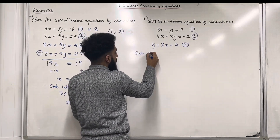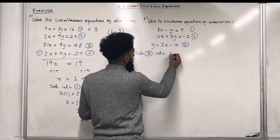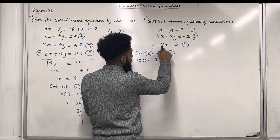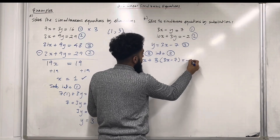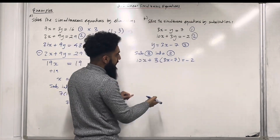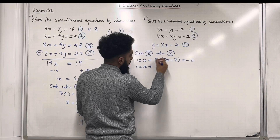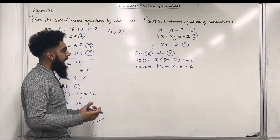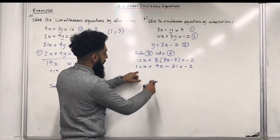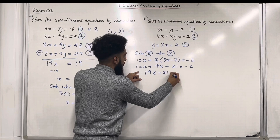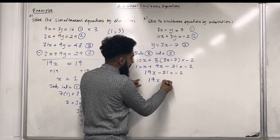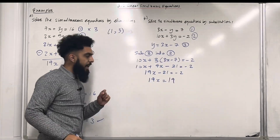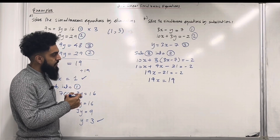Now I need to substitute equation 3 into equation 2. So this gives me 10x plus 3 lots of y, which is (3x minus 7), is equal to minus 2. We need to expand the bracket, which gives me 9x minus 21. So we've got 10x plus 9x minus 21 equal minus 2. Now 10x plus 9x is 19x minus 21 equal minus 2. So 19x is equal to minus 2 plus 21, which is 19. To work out x, we divide both sides of the equation by 19.